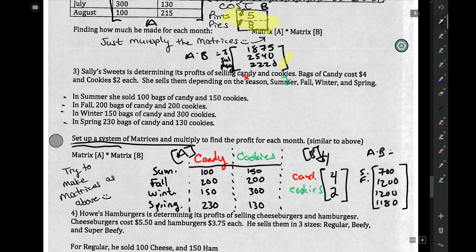And you have $700, $1,200, $1,200 again, and $1,180. So summer, fall, winter, spring. Real easy.